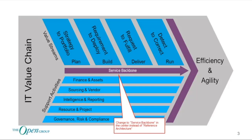The first change is pretty simple but important. If you look at the value chain picture in the middle, it used to say 'reference architecture,' but that's really not the key concept at the center. The important thing that ties all the value chains together and ties them into the supporting activities is really the service backbone. So we promoted the concept of the service backbone into the value chain concept, which is pretty important when we start introducing this topic.